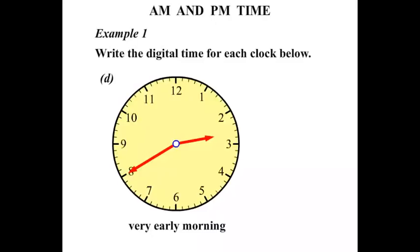This one here, it's twenty to three in the analog time. So we write that as a digital 2:40. Now it's very early morning, so it is AM. 2:40 AM, you'd certainly be still asleep then.